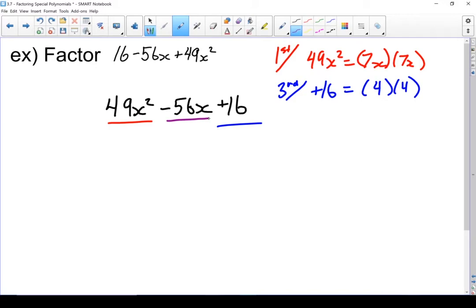Now let's look at this trickier middle one. I've got minus 56x. It's got to be 2 times my first term, which is 7x, and my last term, which is 4. 2 times 7 is 14. 14 times 4 is 56. Yeah, it is a perfect trinomial square.